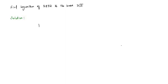We have a problem on logarithm — we have to find the logarithm of 5832 to the base 3 times square root of 2. Since the base of the given logarithm is 3 times square root of 2, we have to write the argument 5832 as a power of 3 times square root of 2. So let us decompose the given argument 5832 into its prime factors, two and three.